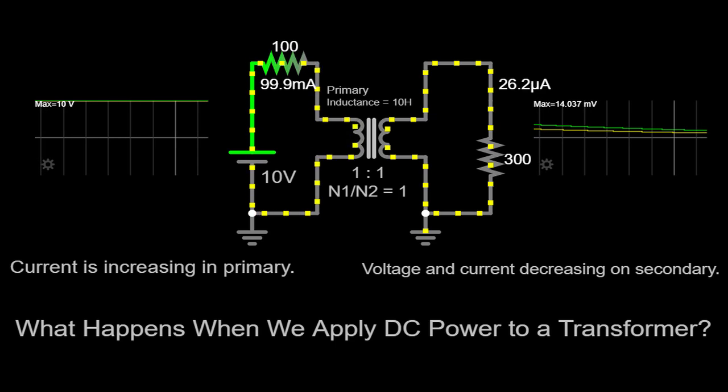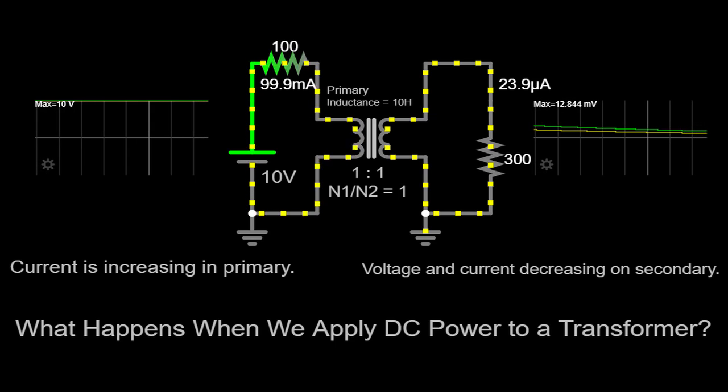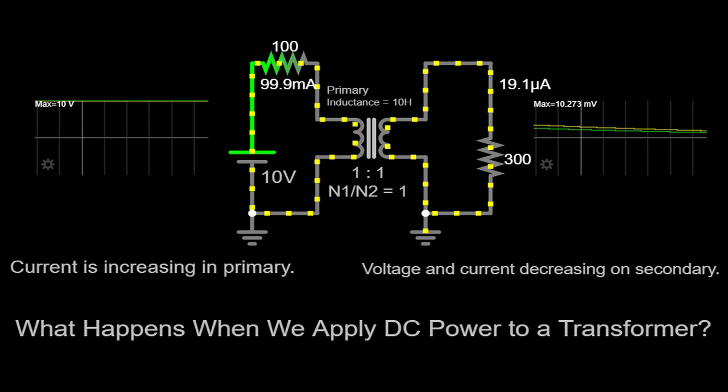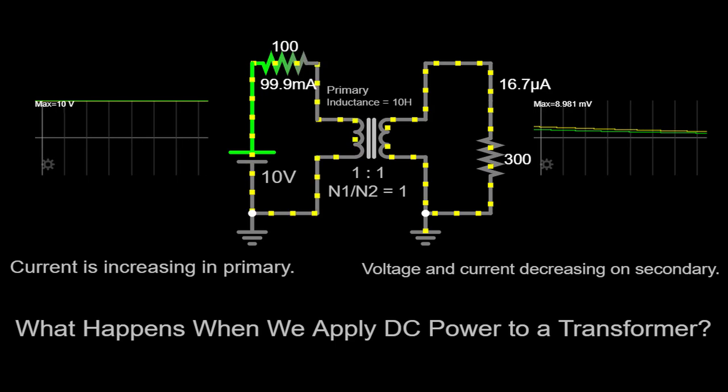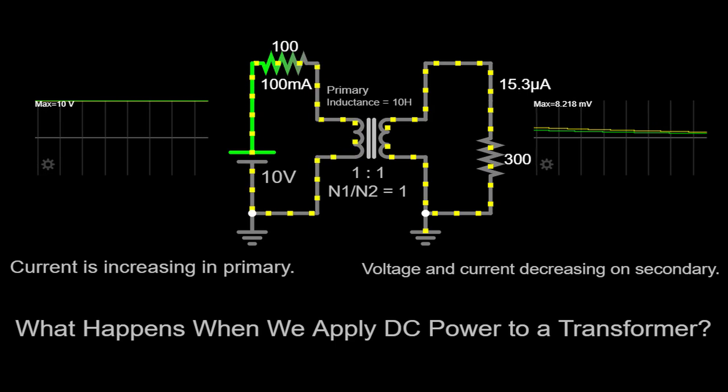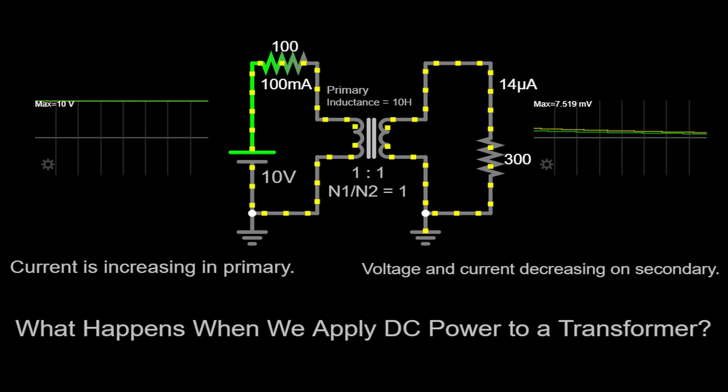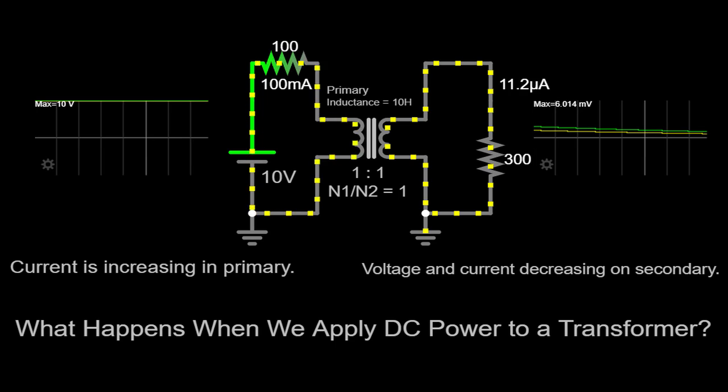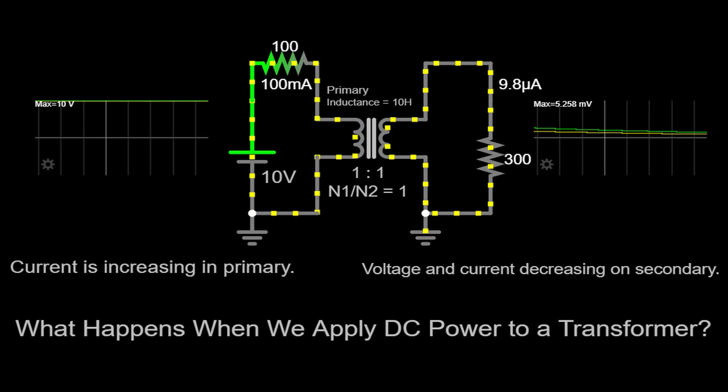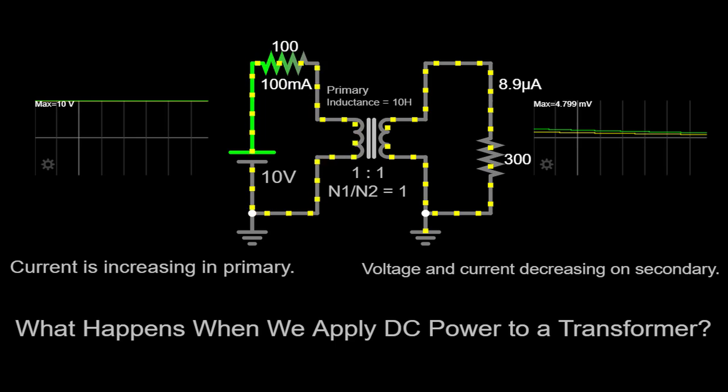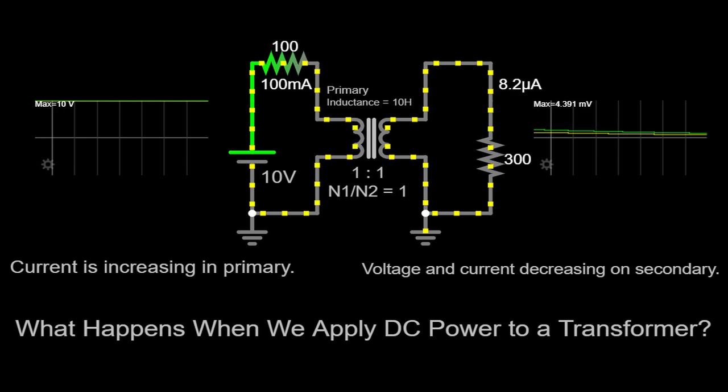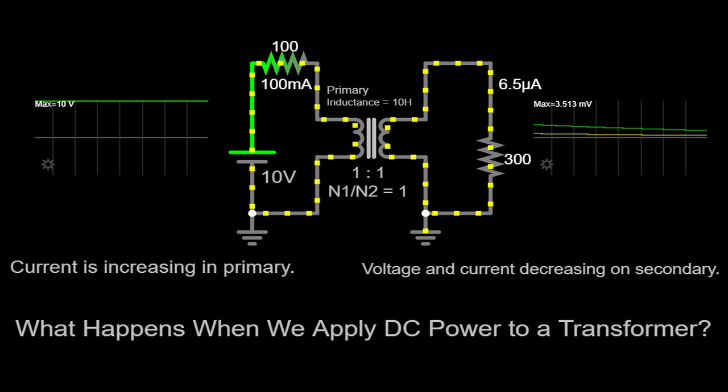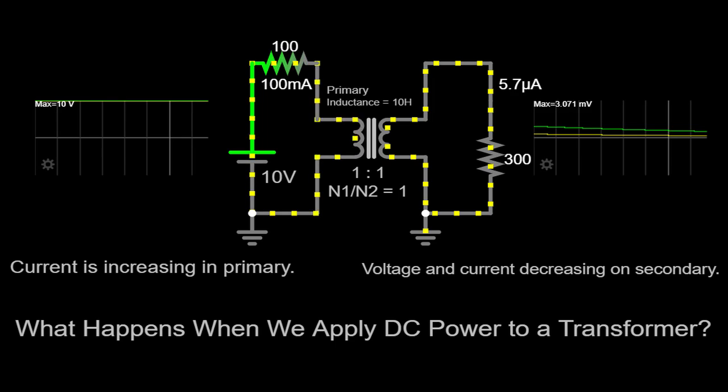To conclude, applying DC power to a conventional AC transformer results in no voltage induction in the secondary winding, rendering it unable to transfer power. Instead, the primary winding generates a magnetization current that circulates within the transformer, primarily serving to magnetize the core. This DC setup can lead to increased heat generation and potential damage to the windings and core due to the continuous flow of current. It's crucial to understand that transformers are specifically designed for AC power systems, where the alternating magnetic field allows for efficient power transfer.